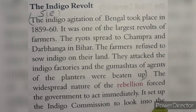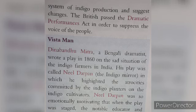The widespread nature of the rebellions forced the government to act immediately. It set up the Indigo Commission to look into the system of indigo production and suggest changes. The British passed the Dramatic Performances Act in order to suppress the voice of the people.